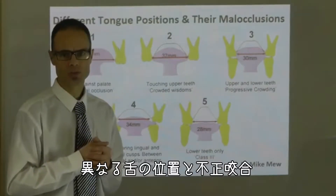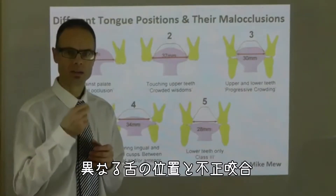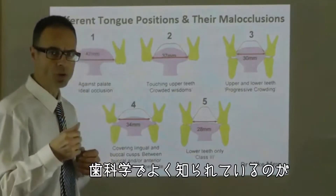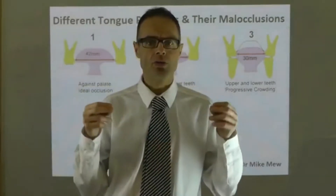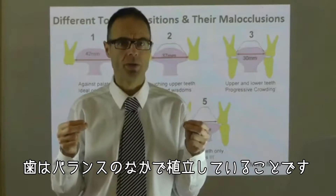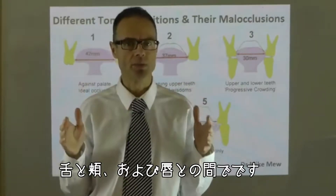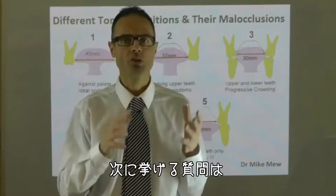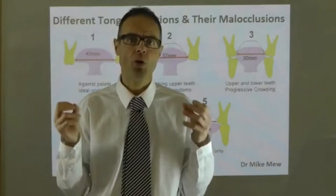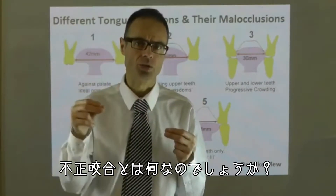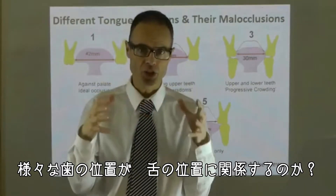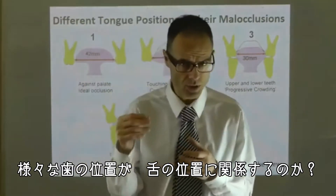Different tongue positions and their malocclusions. It's well known within dentistry that the teeth sit in a balanced position between the tongue and the cheeks and lips, which draws the obvious next question: what malocclusions — what various different teeth positions — can be related to tongue positions?